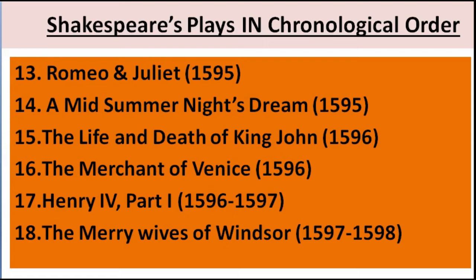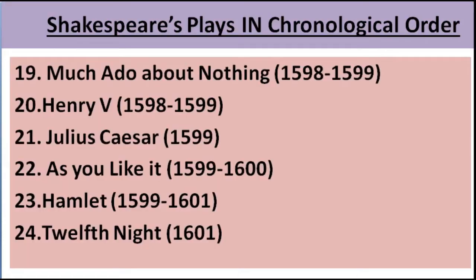The 17th play, Henry IV Part 1, 1596 to 1597. 18th, The Merry Wives of Windsor, 1597 to 1598. 19th, Much Ado About Nothing, 1598 to 1599. 20th, Henry V, 1598 to 1599. 21st was Julius Caesar — one of the greatest plays written by Shakespeare — 1599. 22nd, As You Like It, 1599 to 1600. 23rd was Hamlet, one of the greatest and most renowned plays of William Shakespeare, with a time span of writing 1599 to 1601.